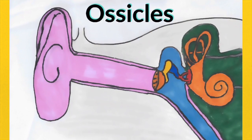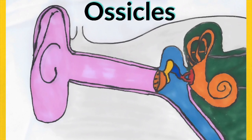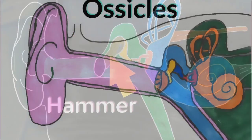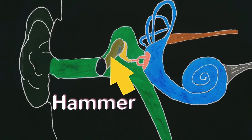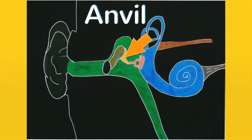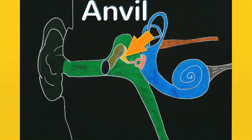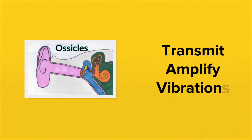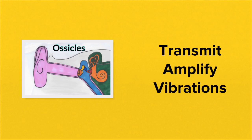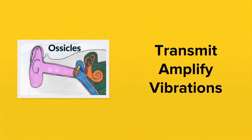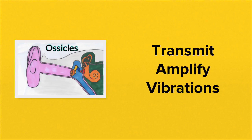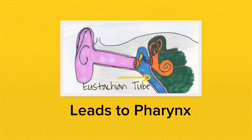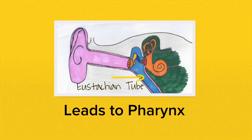The eardrum begins to vibrate and attached to the other side of the eardrum is the first of the ossicles — the three tiny bones of the middle ear. The first is the hammer, which vibrates; attached to it is the anvil, which now starts to vibrate; and attached to the anvil is the stirrup, which then also begins to vibrate. The function of the ossicles is to transmit the vibrations onwards and to amplify those vibrations. A tube known as the eustachian tube connects the middle ear to the pharynx — to the throat.